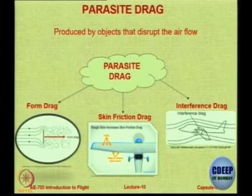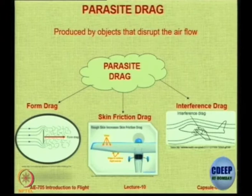Any object that disrupts the flow of air by virtue of its presence creates what is called parasite drag. It has three components: form drag, because of the shape or frontal area of the body creating a pressure difference; skin friction drag; and interference drag. All three are not at all connected with the generation of lift — even if you have no lift you will still have these three drags. That is why we call them parasite drag.